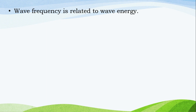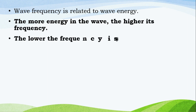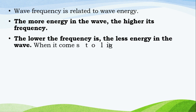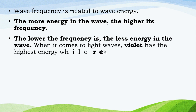Ang frequency ng light waves ay tumutukoy sa bilang ng mga alon na dumagalaw na lampas sa isang tiyak na punto sa isang segundo. Ang frequency ay karaniwang sinusukat sa hertz, ang mga unit ng ikot bawat segundo. Ang kulay ay may frequency mula sa 430 trillion hertz hanggang 750 trillion hertz. Wave frequency is related to energy. The more energy in the wave, the higher its frequency. The lower the frequency, the less energy in the wave. When it comes to light waves, violet has the highest energy, while red has the lowest energy.